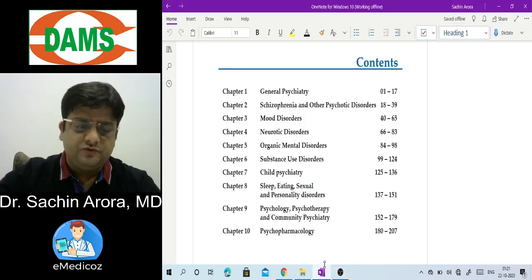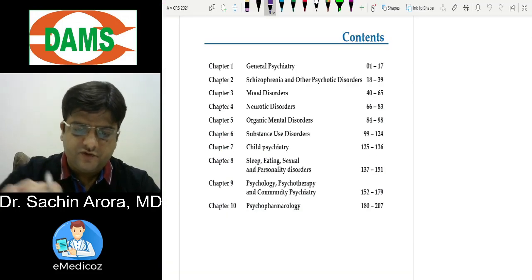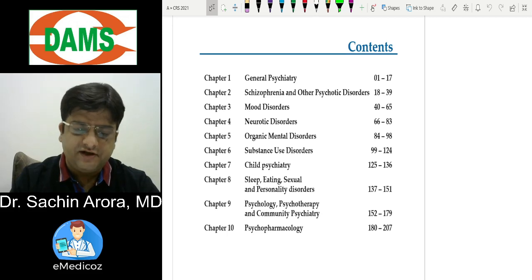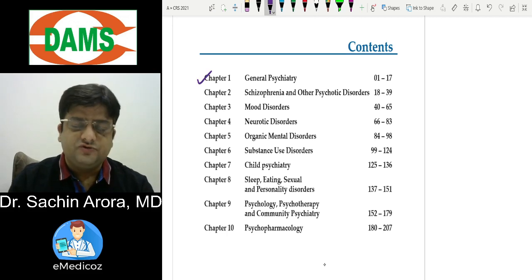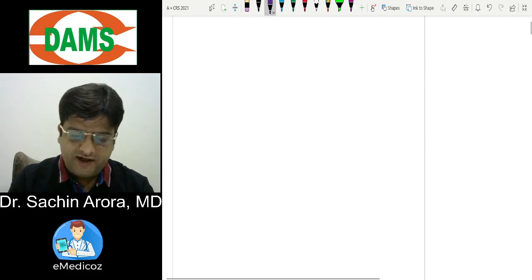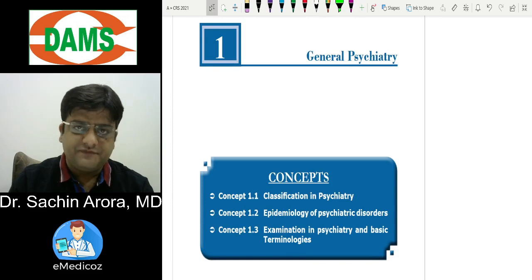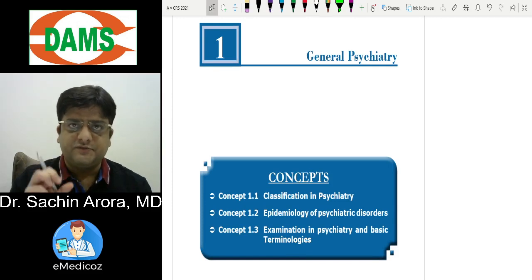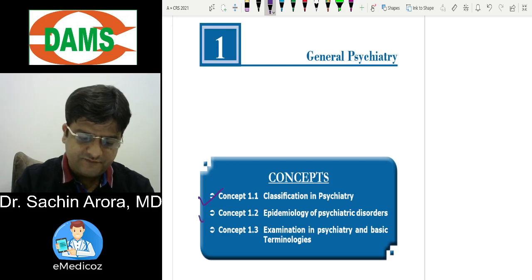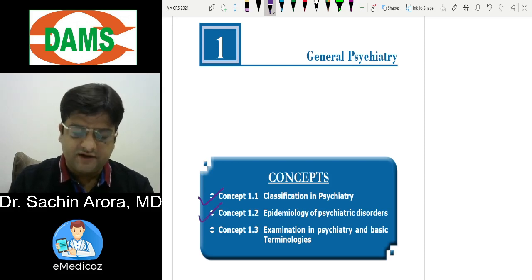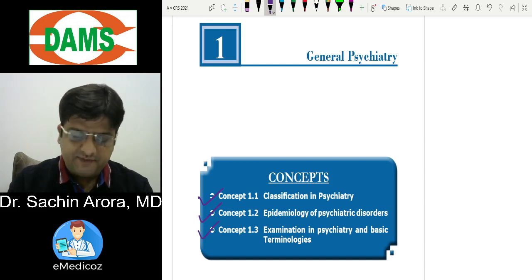Welcome to the Talking CRS version of psychiatry. We have 10 chapters in psychiatry and this video is about Chapter 1: General Psychiatry. In the concept book, every chapter has some concepts. Chapter 1 includes concept 1.1 Classification in Psychiatry, concept 1.2 Epidemiology of Psychiatric Disorders, and concept 1.3 Examination in Psychiatry and Basic Terminologies.